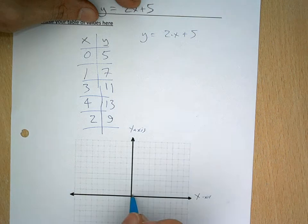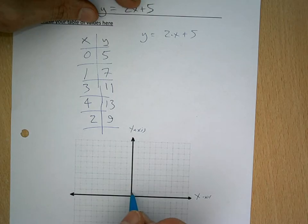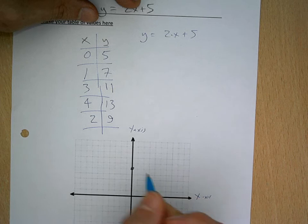So now I have these ordered pairs and I can graph them. So I'm going to plot 3. So 0, 5, 1, 2, 3, 4, 5. Wait, 1, 2, 3, 4, 5 is here.